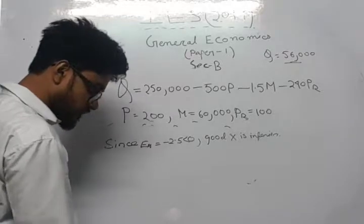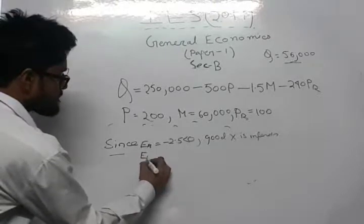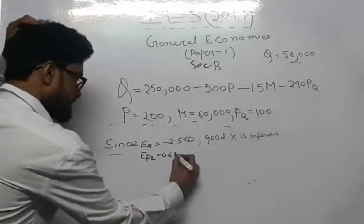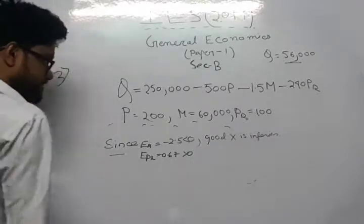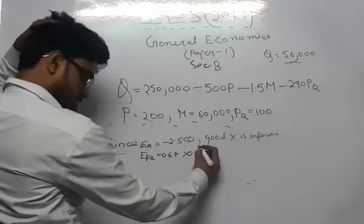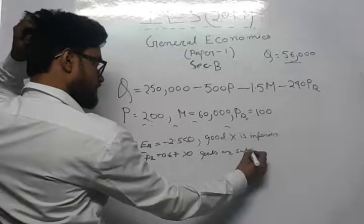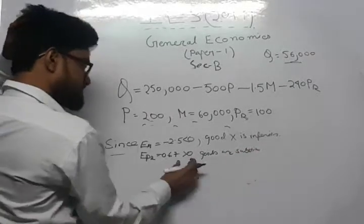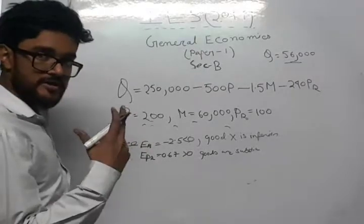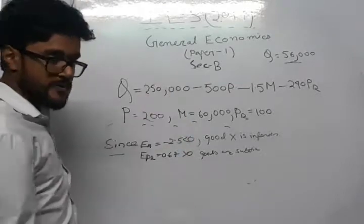The next part asks whether goods X and Y are substitutes or complements. Since EPR equals 0.67, which is greater than 0, we conclude that the goods are substitutes. When EPR is greater than 0, one good can be exchanged for the other when the price of that good increases.